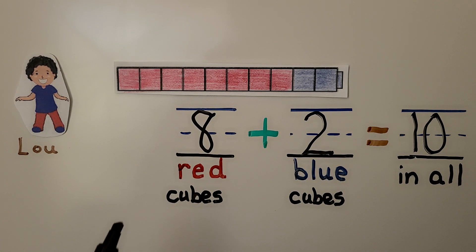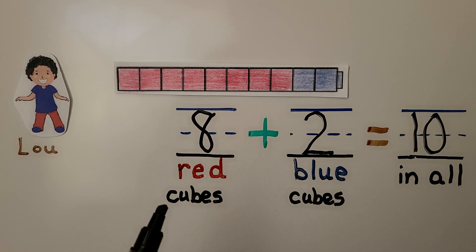We were told there were 8 red cubes. We count on until we get to 10. Eight, nine, ten. That's 2.